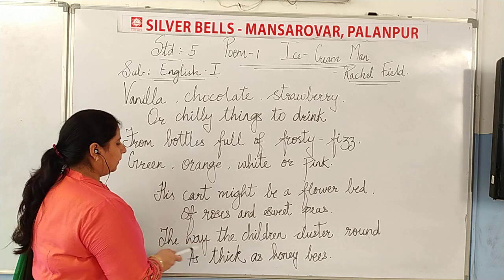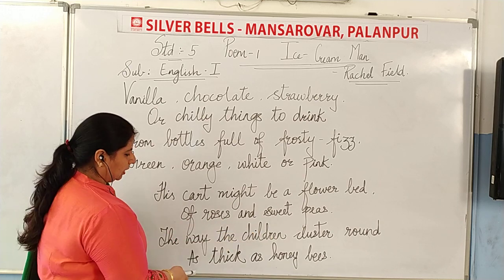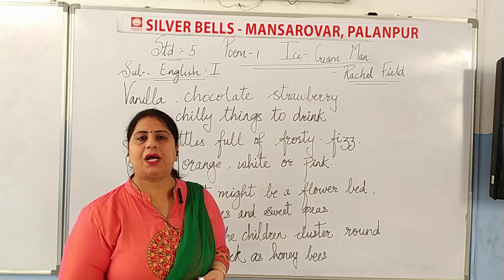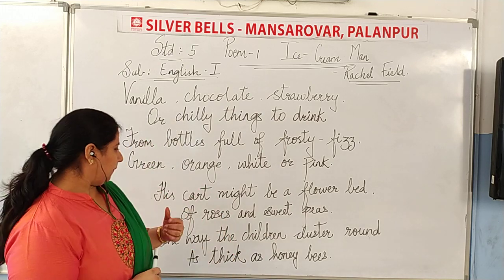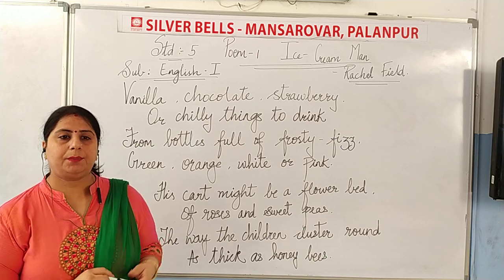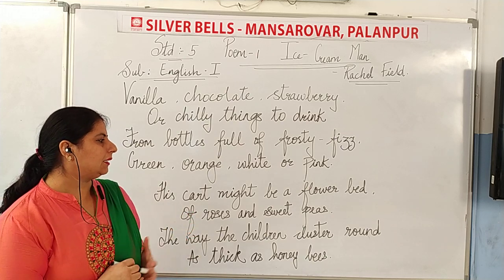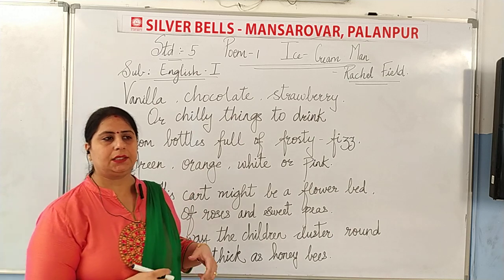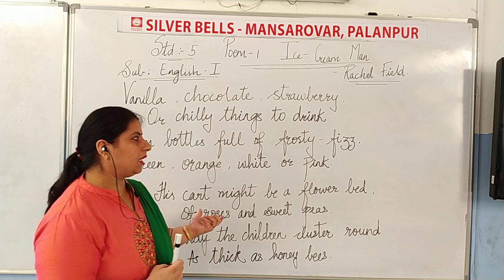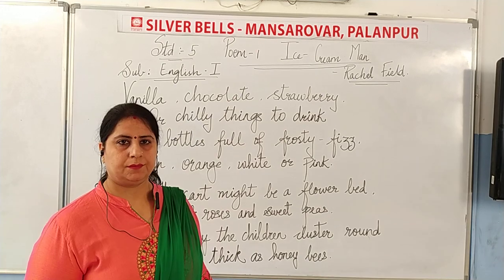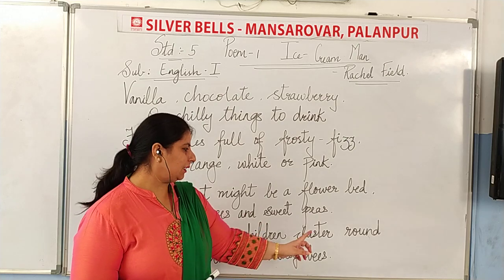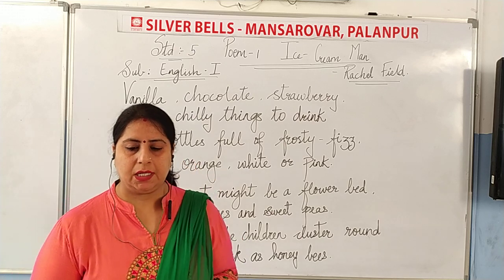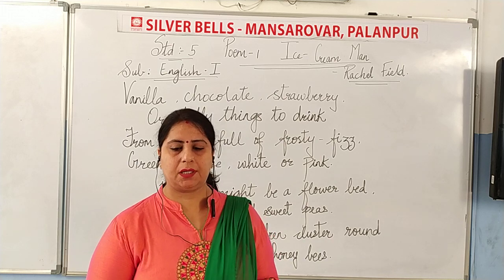This cart might be a flower bed of roses and sweet peas, the way the children cluster around, as thick as honey bees. The poet has compared the ice cream man's cart to a flower bed. There are many roses and sweet peas. The children gather around the ice cream man just like honey bees cluster around flowers to get nectar. When it is very warm and the ice cream man comes, the children slowly gather because they also need ice cream.